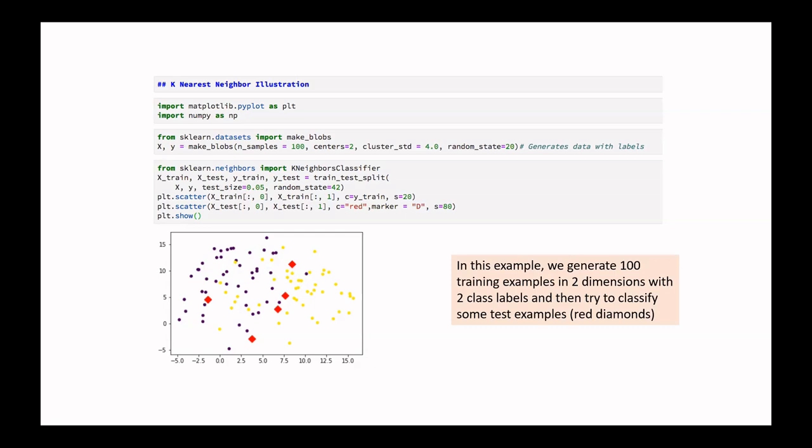We specify a random state for the train-test split as well, because scikit-learn does a random partition of data. Before seeing results, we plot all points. All 100 points are plotted — the five test examples are shown as large red diamonds, and the remaining training points are shown in yellow or another color representing the two classes.